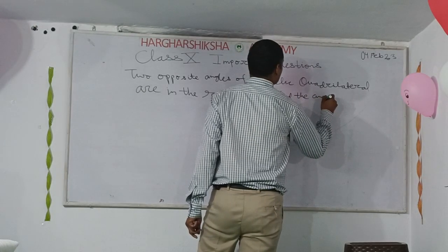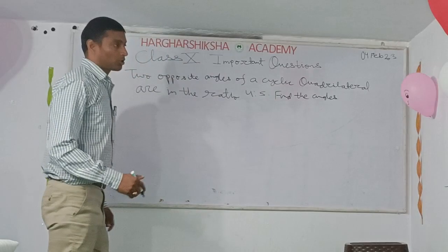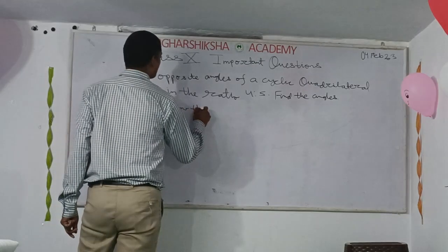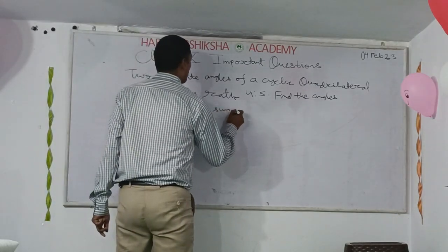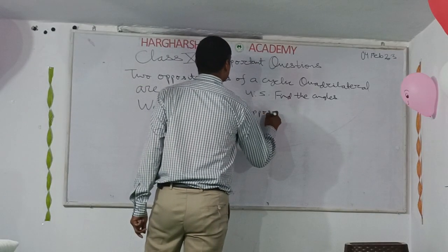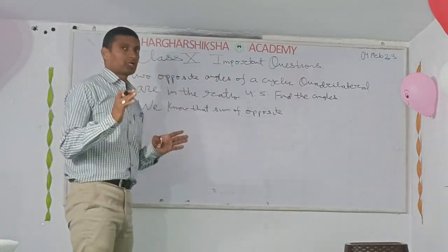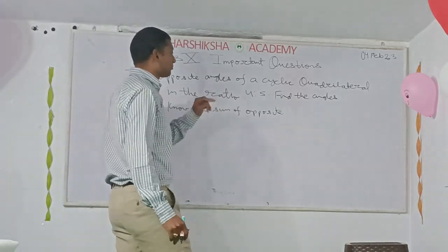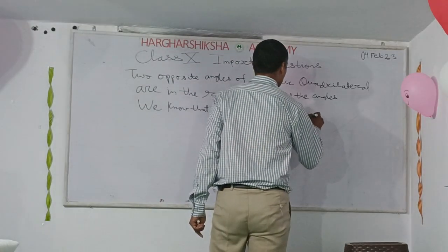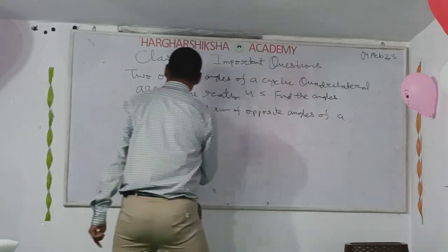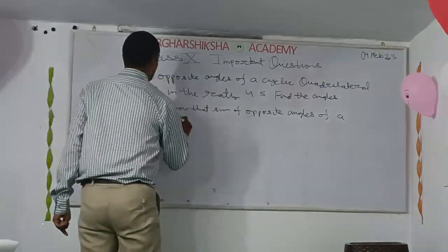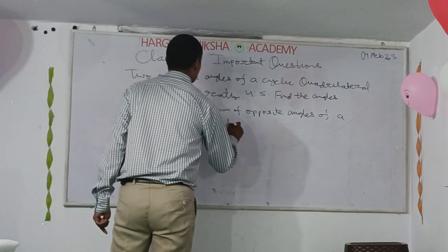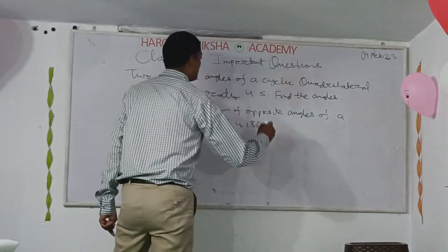So, how do we do this? We know that the sum of opposite angles of a Cyclic Quadrilateral is 180 degrees.